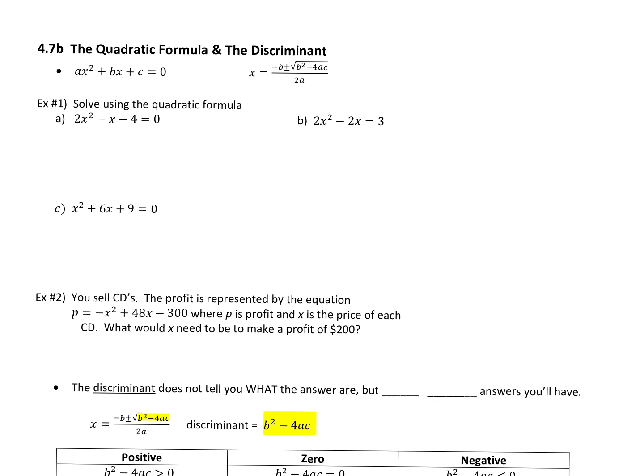So here's what we do. You have this format — we have an A, a B, and a C set equal to zero — and we plug it into this formula. The quadratic formula leaves a whole lot of room for silly mistakes because we have so many numbers, positives and negatives, divisions, and square roots. So I need you to be on your A game and plug this in the right way from the get-go.